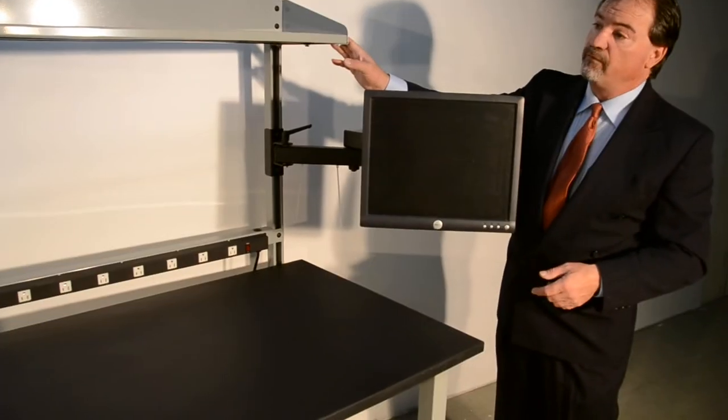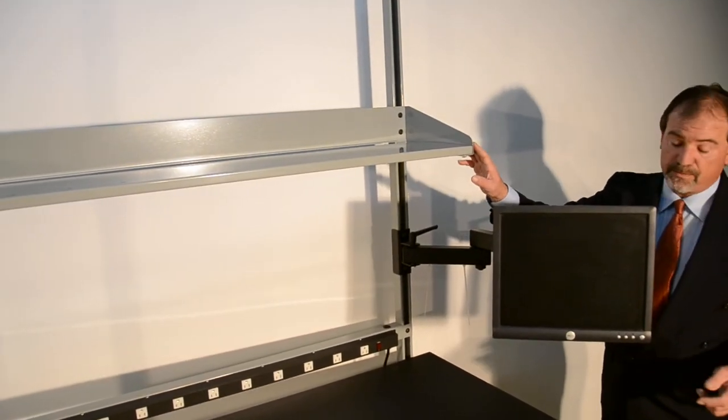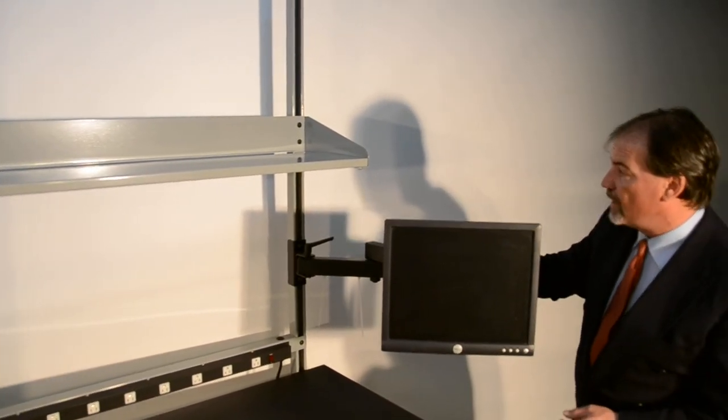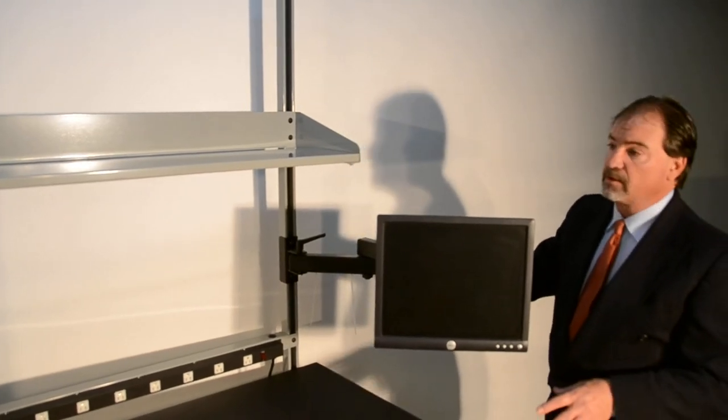We're showing a 12 inch deep cantilever shelf with a 4 inch backstop. This shelf is pre-drilled already for dividing. Again, it's the Model HD, 5,000 pound capacity.